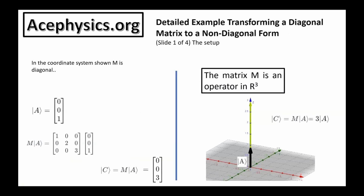Now I move on to a detailed example: transforming a diagonal matrix to a non-diagonal form. The goal is to teach you how to transform a matrix operator from one basis to another — called a similarity transformation or conjugation. I will take matrix M, which is diagonal in the x, y, z basis, and transform it into the x-prime, y-prime, z-prime basis, rotated by 30 degrees about the y-axis. In the prime rotated coordinate system, the matrix M will no longer be diagonal. The matrix M acting on vector A produces a new vector C, and M stretches vector A by a factor of 3.